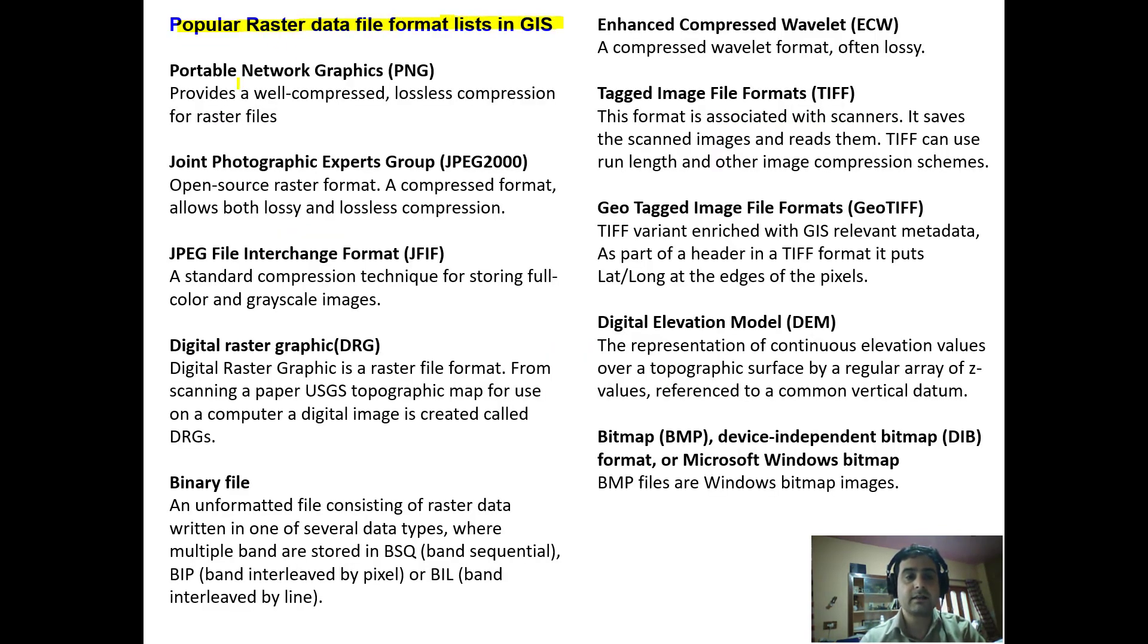Let's have a look at some popular raster data file formats. This is Portable Network Graphics PNG, which provides well-compressed lossless compression. JPEG 2000 is an open source raster format that allows both lossy and lossless compression. Then JPG, JPG File Interchange Format, a standard compression technique for storing full color and grayscale. Now Digital Raster Graphics, DRG, a binary file.